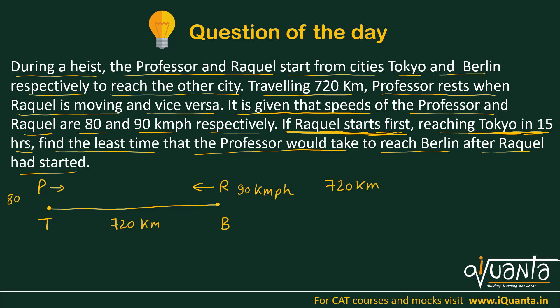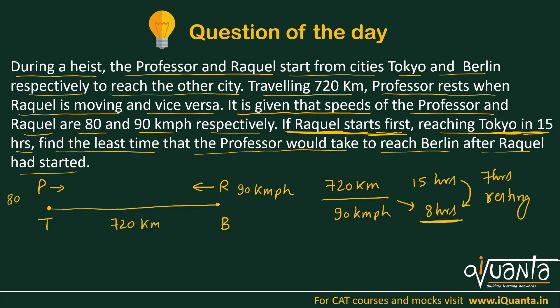So now we know that the distance is 720 kilometers and Raquel is taking 15 hours. We know that the speed of Raquel is 90 kmph. If she is travelling at 90 kmph, she must have travelled 720 kilometers in 8 hours. So if Raquel is moving for only 8 hours out of these 15 hours, then the remaining 7 hours she must be resting.